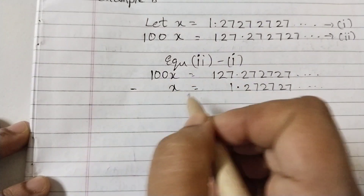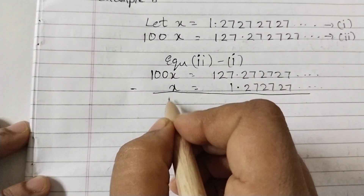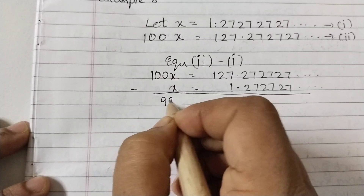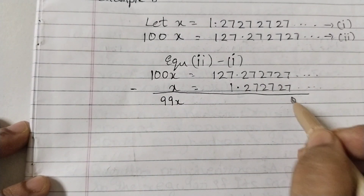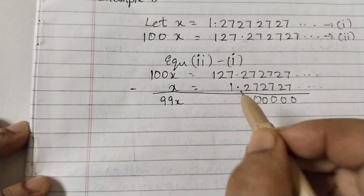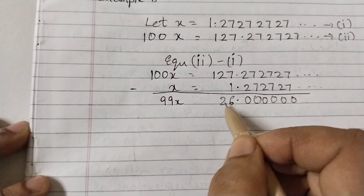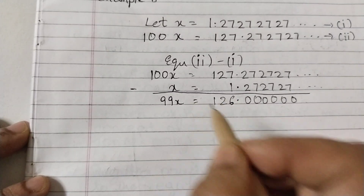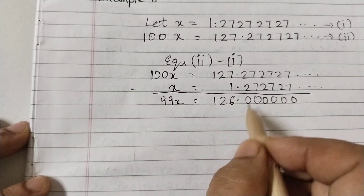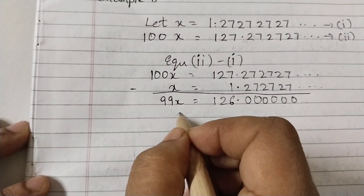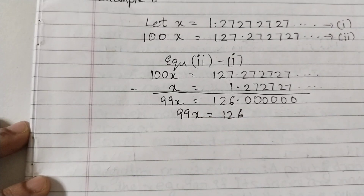Subtracting: 100x minus x is 99x. On the right side, the repeating decimal parts cancel out: 127.2727... minus 1.2727... The decimal portion cancels, leaving 99x = 126.